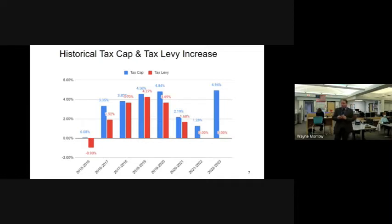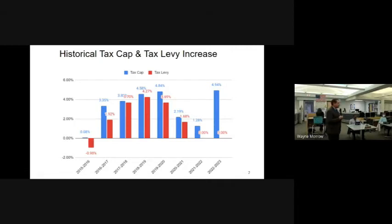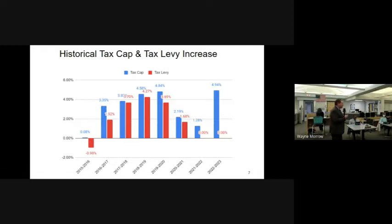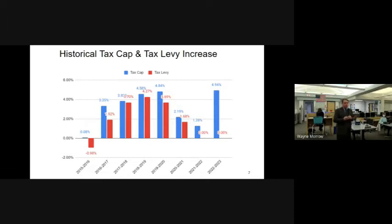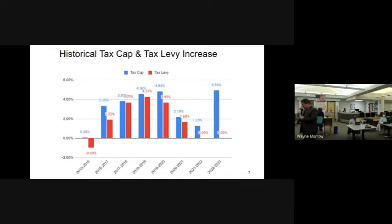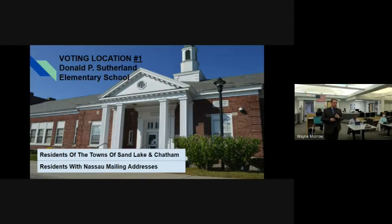This graph represents our board's record over several years of remaining within the tax cap. The blue line represents what we could have taxed to remain within the cap versus where we are actually proposing the tax level. For the last two years, we have remained at a 0% tax increase while maintaining academic and extracurricular programs, keeping class sizes low, and keeping all elective courses including college credit and AP courses. This is in part because of past fiscal responsibility—we've maintained reserves, appropriating about $6.8 million in fund balance—and because we have received significant increases in state aid and federal aid.